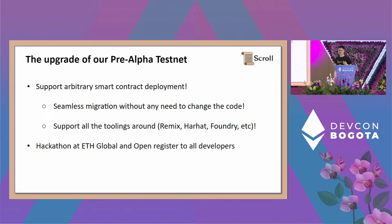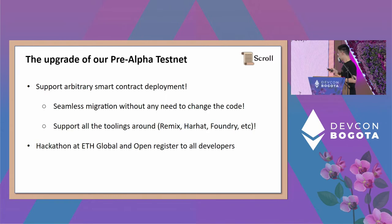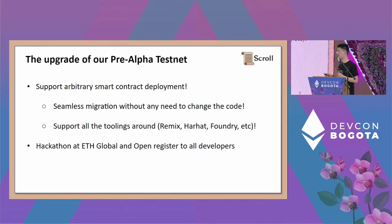You can experience seamless migration without changing any line of your code — just copy-paste your code from layer one and directly deploy on layer two. We support all tooling around it: because we are natively EVM equivalent at the bytecode level, we support Remix, Hardhat, and even Foundry. A few days ago, we held a hackathon at ETH Global, letting hackers register on our testnet and deploy things on us. We've also done live demos at ETH Global.